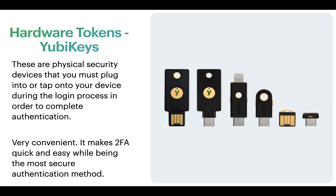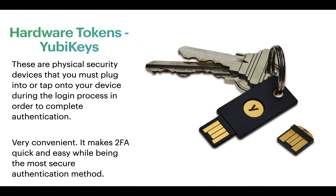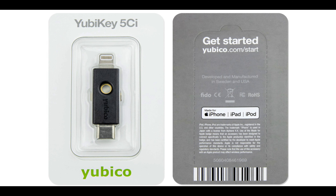Finally we move on to hardware tokens — the YubiKeys I mentioned earlier. These are physical security devices that you must either plug into or tap onto your device during the login process to complete authentication. I find this method very convenient, quick and easy, and by far the most secure of all the methods shown. They come in different shapes and sizes — some small enough to leave plugged into your device, and most can fit on a keychain. They're quite durable; I've had one for about two years and it still works like a charm. Now I'm going to show you guys how to set this up on your email and exchange accounts, starting with a quick unboxing of my YubiKey 5CI.